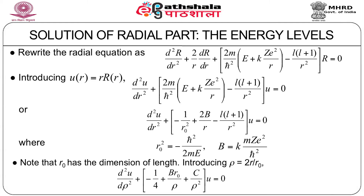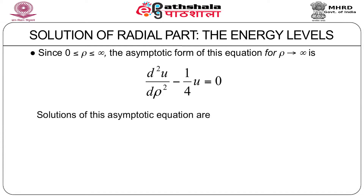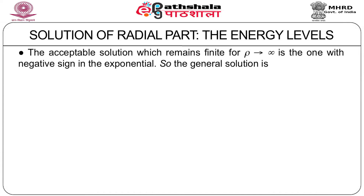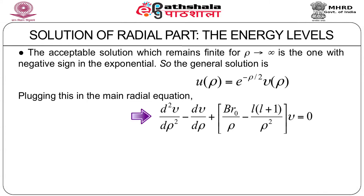Since ρ lies between 0 and infinity, the asymptotic form of this equation is d²U/dρ² − (1/4)U = 0. Asymptotic solutions are e^(±ρ/2). The acceptable solution, which remains finite for ρ tending to infinity, is the one with negative sign in the exponential. So the general solution can be expressed as U(ρ) = e^(−ρ/2) multiplied by V(ρ). Plugging this into the main radial equation, you find that this new function V(ρ) satisfies d²V/dρ² − dV/dρ + [Br₀/ρ − L(L+1)/ρ²]V = 0.